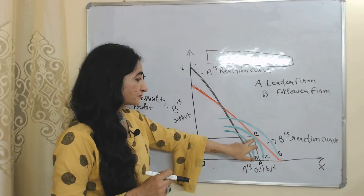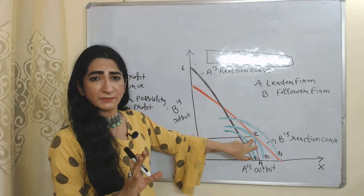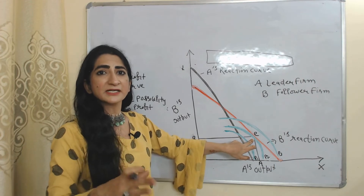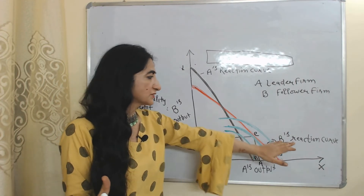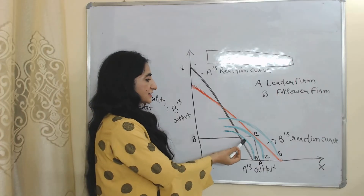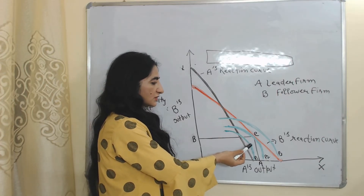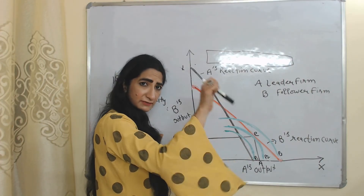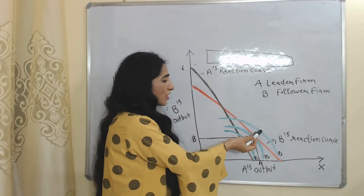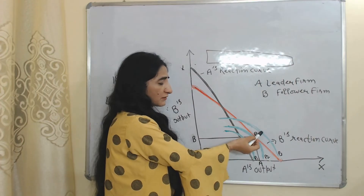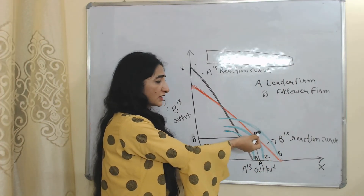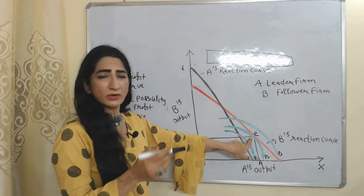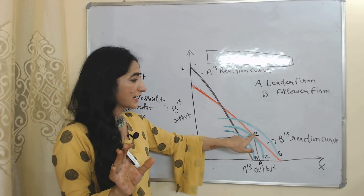E is called the Stackelberg equilibrium point. At this point, A decides its profit-maximization output based on the response of B. A cannot decide its output at a lower isoprofit curve because that gives less profit. A higher isoprofit curve would give more profit, but that would not align with B's reaction curve.